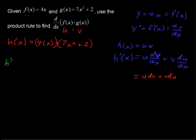We've got h prime of x, and I'm going to substitute this in. So first the u function, that's 4x, multiplied by dv dx, so the derivative of 7x squared plus 2. Well, the derivative of 7x squared is 14 times x to the power of 1 plus 0, because the derivative of a constant is 0.